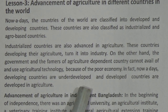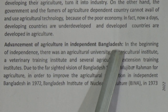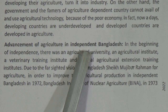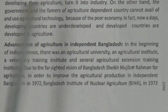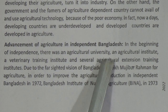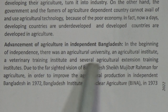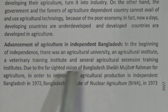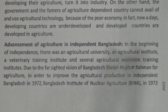Now we learn about the advancement of agriculture in independent Bangladesh. Bangladesh is an independent and agricultural country, developing in its agricultural sector. In the beginning of independence, there was an agricultural university, an agriculture institute, a veterinary training institute, and several agricultural extension training institutes, due to the farsighted vision of Bangabandhu Sheikh Mujibur Rahman.